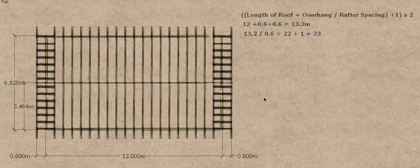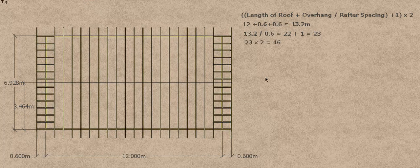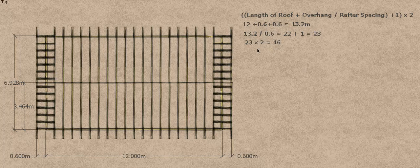That's one side of the roof done. We then need to double that — multiply by 2 to get the other side — giving us 46 rafters in total for this particular roof.